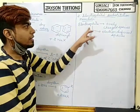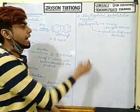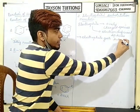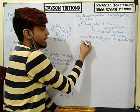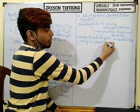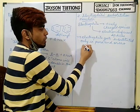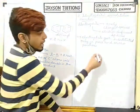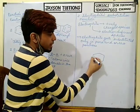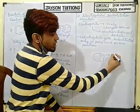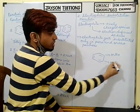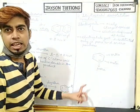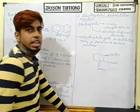In a halo-arene, the electrophile gets substituted only in the ortho and para positions. In the benzene ring there are three positions: ortho, meta, and para. The electrophile will get attached only in the ortho position and the para position.